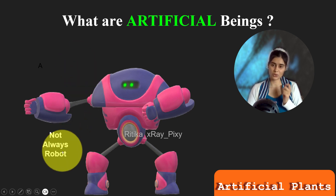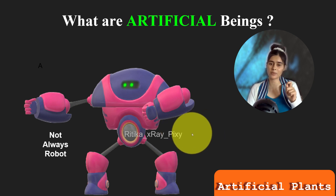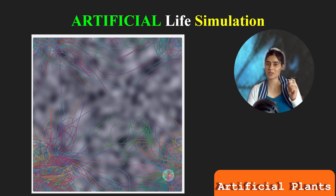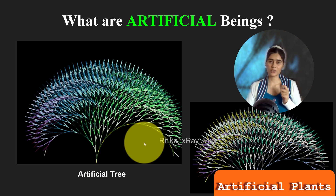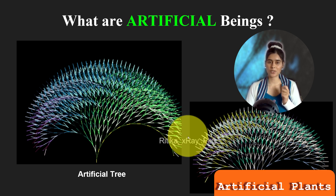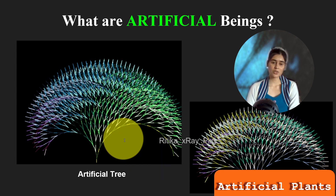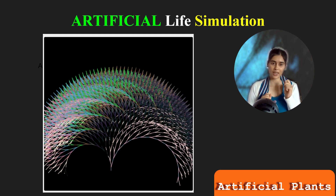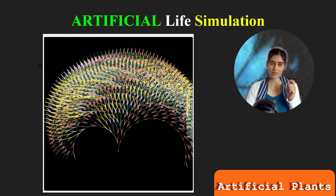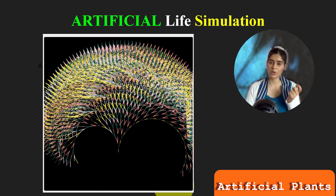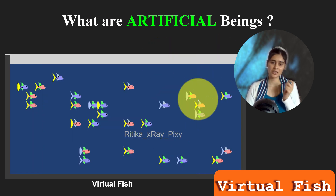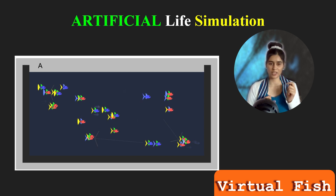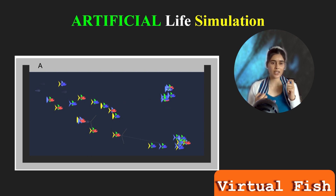Artificial beings are not always robots. In artificial life, an artificial being does not always resemble a specific creature or robot — they are typically represented as digital entities that follow certain rules and behaviors. For example, artificial plants are virtual computer-generated plants that grow, change shape, and respond to environmental conditions, competing for light resources with growth patterns modeled using algorithms. Another example is virtual fish in a digital aquarium — they can swim, find food, and avoid predators, represented as digital entities without physical bodies.